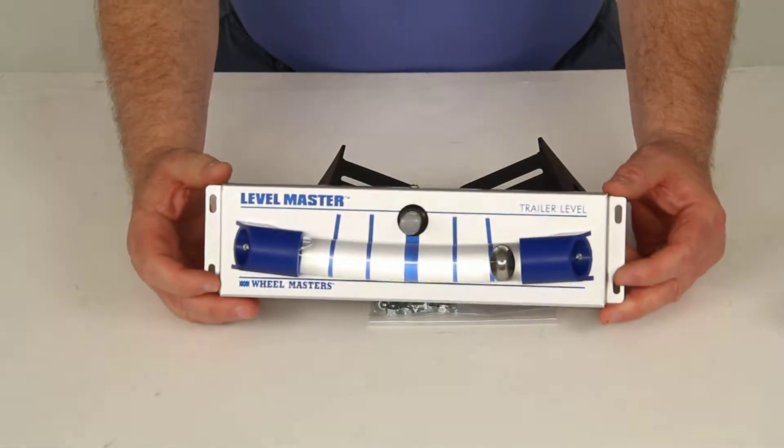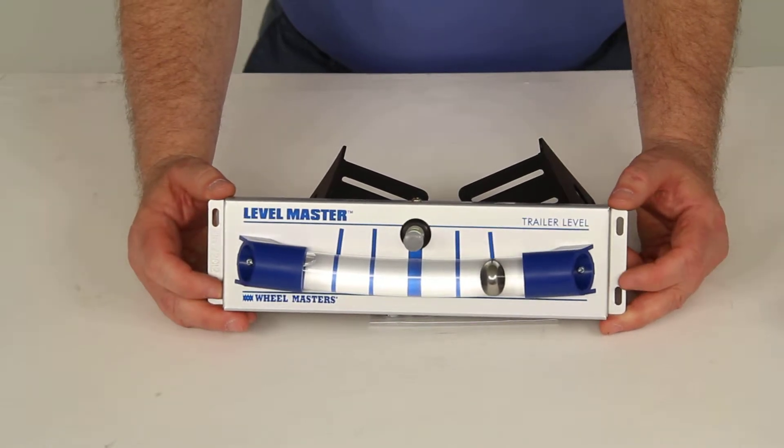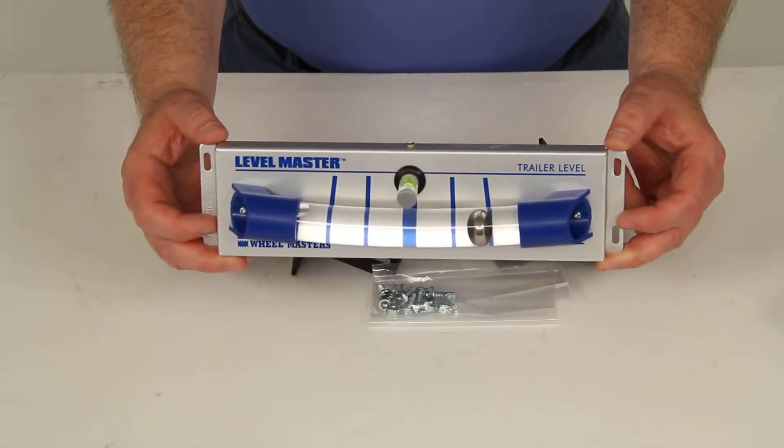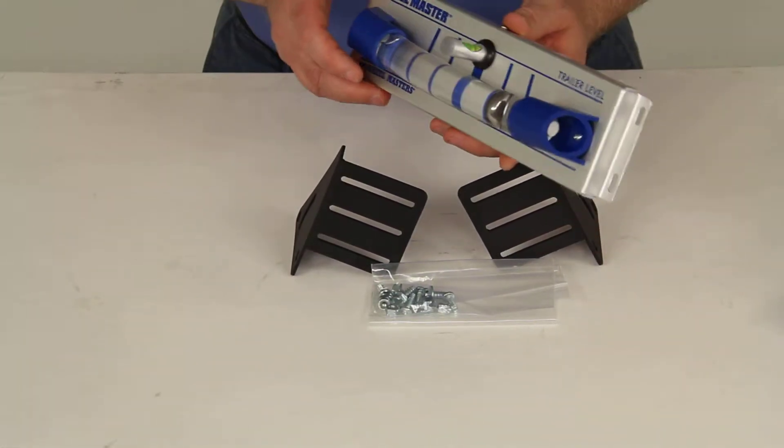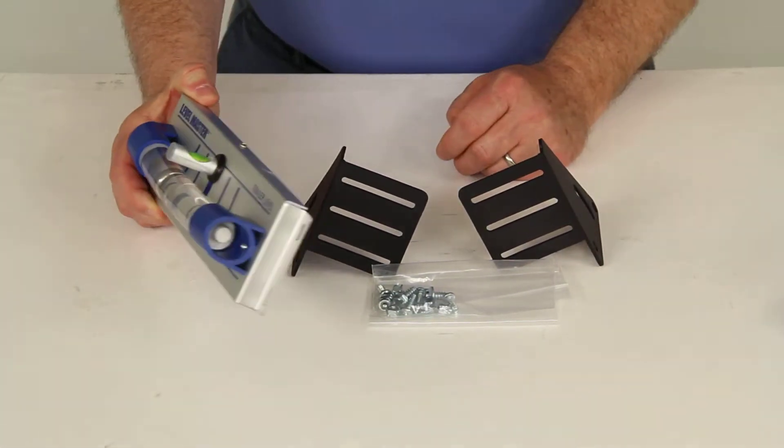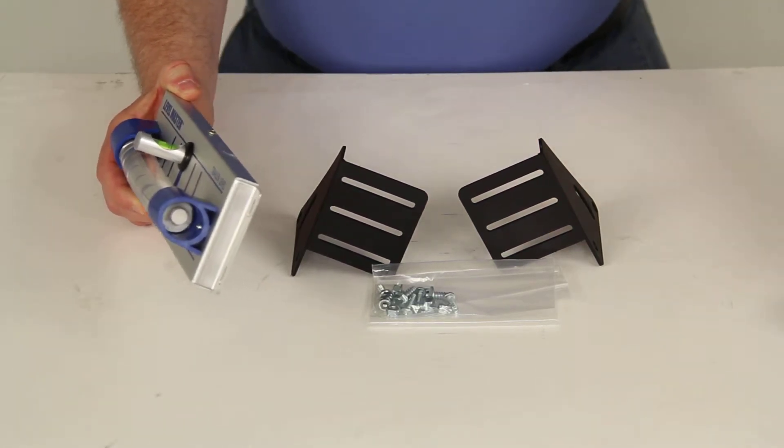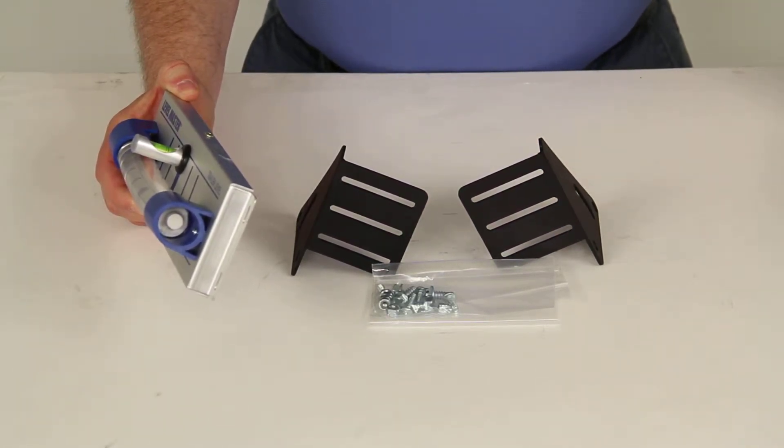Basically this level is mounted to your camper or your fifth wheel to make sure it is level side to side and front to rear. And some of the fifth wheels will have a king box that could be slanted anywhere from 25 to 90 degrees.